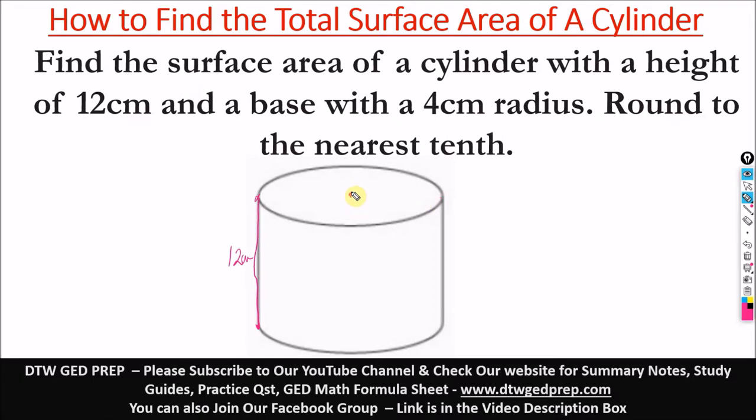So let's say this is the center of this base here. The bases of a cylinder are two circles. So here we have the radius, it will be from here to here, which is 4 cm. It says round to the nearest tenth. So after we find the value, we have to round to the nearest tenth.